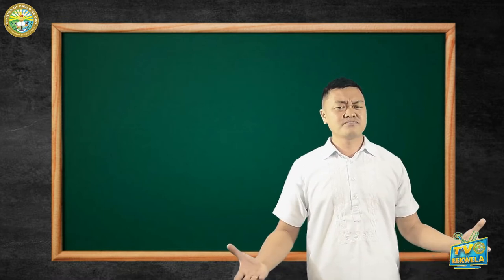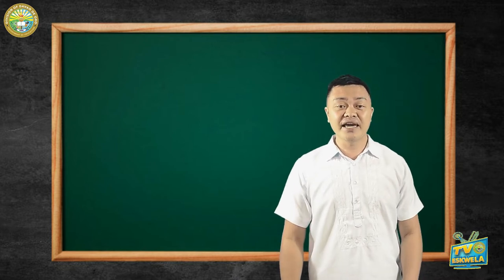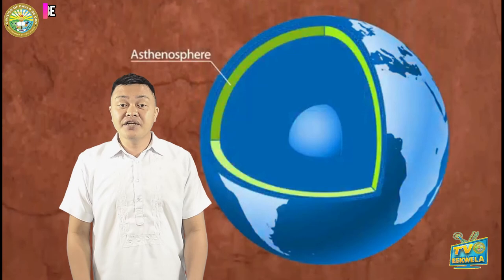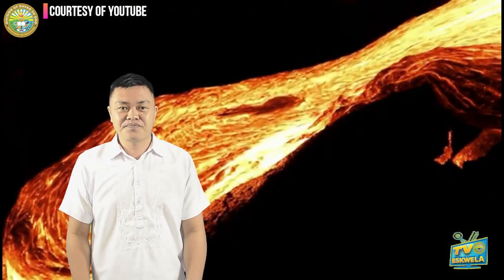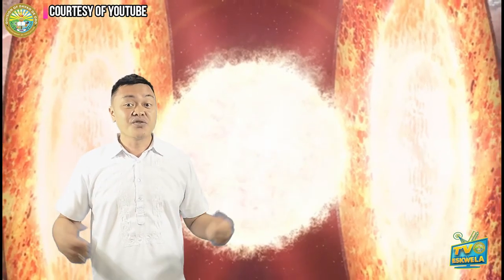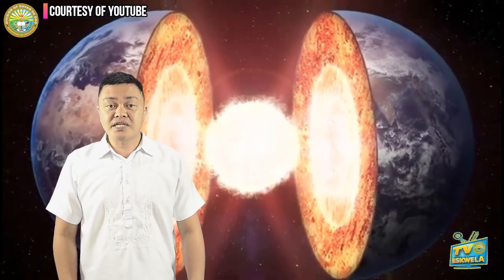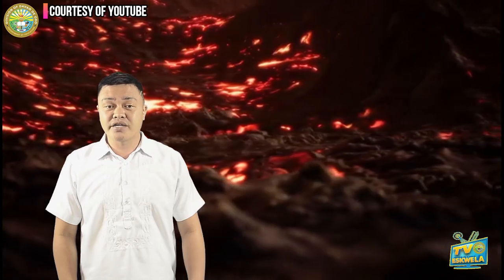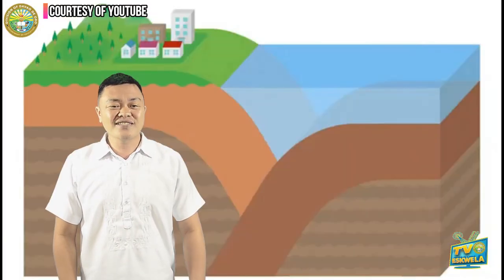Why do plates move? They move because below them is a layer called the asthenosphere. The asthenosphere layer is basically liquid-like molten rock that moves around deep below the surface, squishy like lava. The rock is molten or in liquid form because it is really, really hot at the center of the Earth, and its heat aims to go upward. The tectonic plates are sitting on top of the molten rock in the asthenosphere — that's what causes them to move and shift.